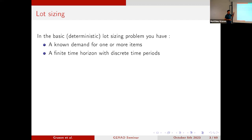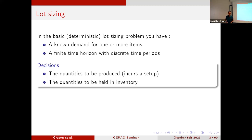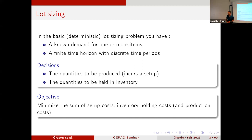The basic lot sizing problem determines: we have a known demand for one or several items over a finite time horizon, and this time horizon is divided into periods. We want to satisfy the demand for those different items. The decisions we have to make are how much we're going to produce in each time period, how much we keep in inventory from one period to the next, and the setup decisions along with the quantities produced.